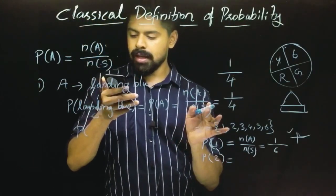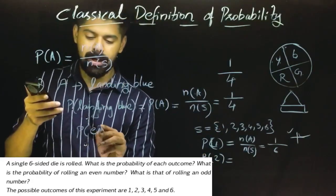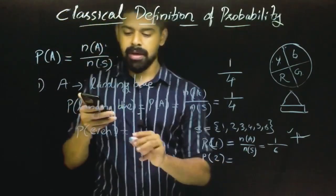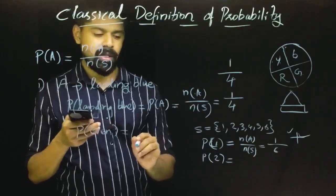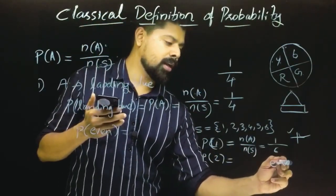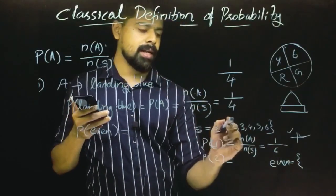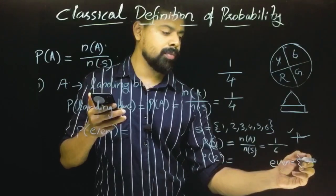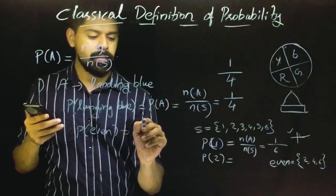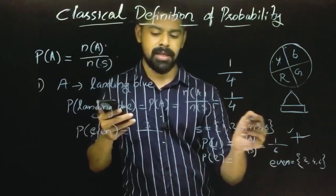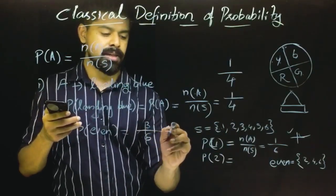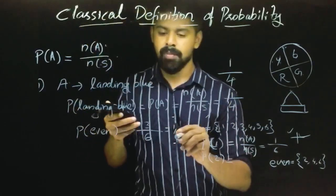What is the probability of rolling an even number? The even numbers are 2, 4, and 6. The number of favorable outcomes is 3 even numbers. The sample space has 6 outcomes. So n(A) divided by n(S) equals 3 by 6, which simplifies. The probability of an even number is 3 by 6.